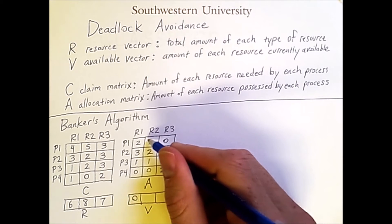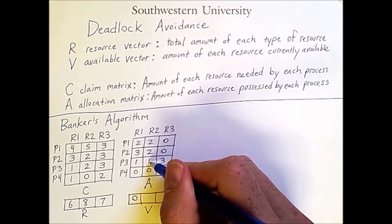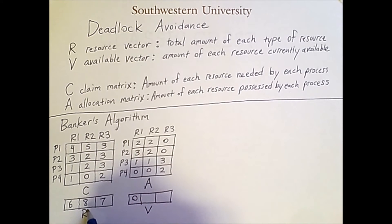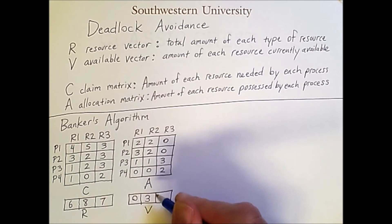For resource 2, we have 1, 2, 3, 4, 5 allocated units out of a total of 8. So 8 minus 5 means there are 3 units of resource type 2 left to be claimed.